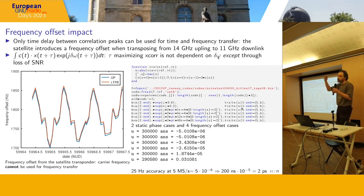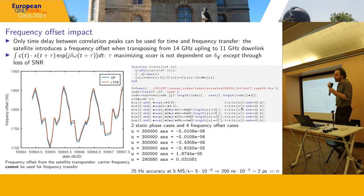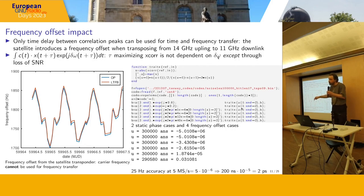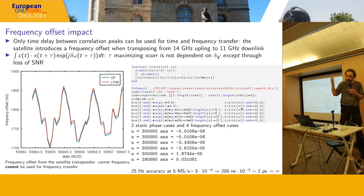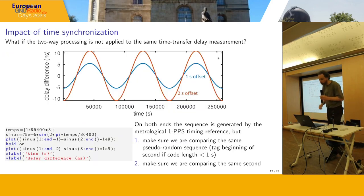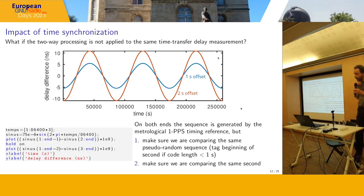So frequency offset is not the cause of our remaining problem. If a poorly identified downlink frequency offset creates only 2 picoseconds — much lower than the 200 picosecond standard deviation — what is the actual cause of our leftover problem?